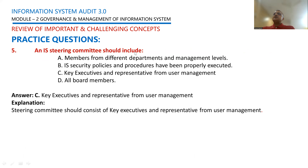Fifth question: an IS steering committee should include members from which group? Options include members from different departments and management levels; IS security policies properly executed; key executives and representatives from user management; and all board members. You cannot have all board members in the steering committee since it is about implementation. The answer is key executives and representatives from user management.